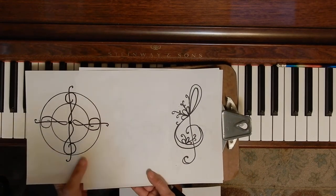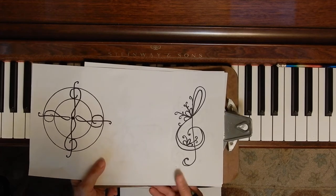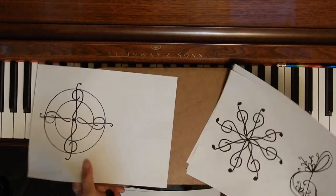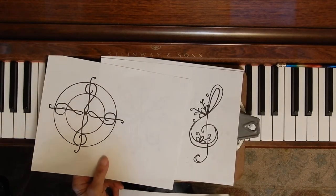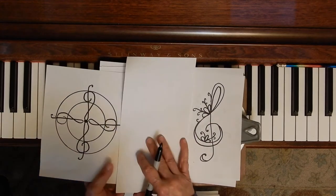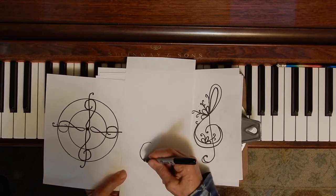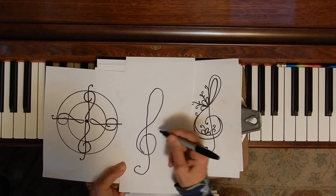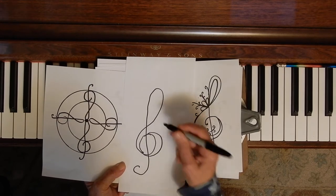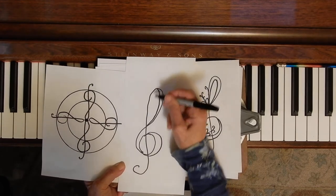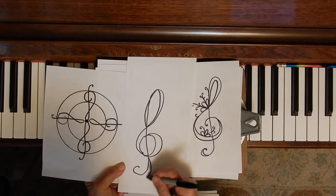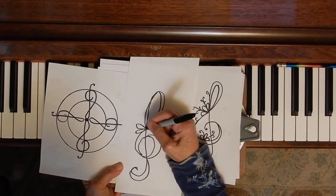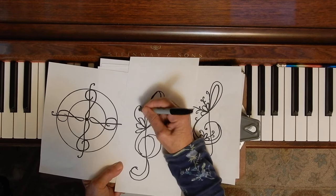So now this thing here, this is just the normal treble clef, but we kind of decorated it. So let's do that right now. Let's decorate that thing. We draw the treble clef. And then we make it a little fatter in some spots. And like this, and like this. Then maybe we add something in here, some flower petals. We put a few curly cues coming out of that.